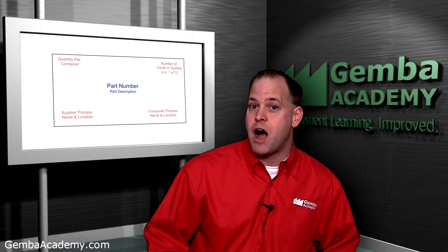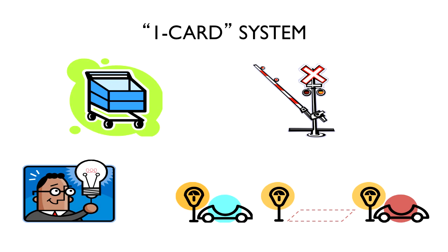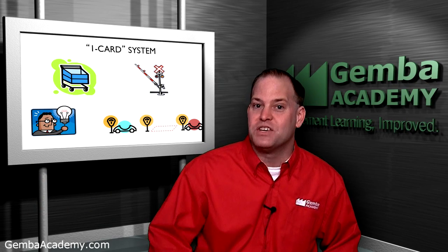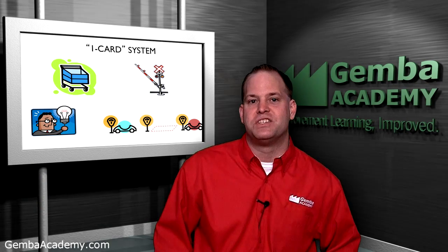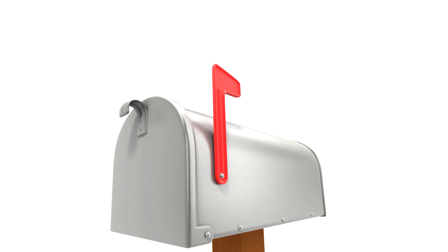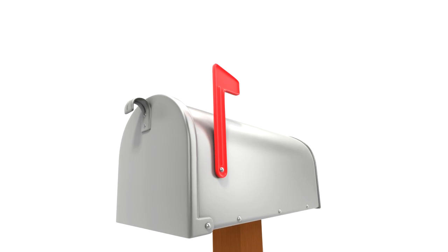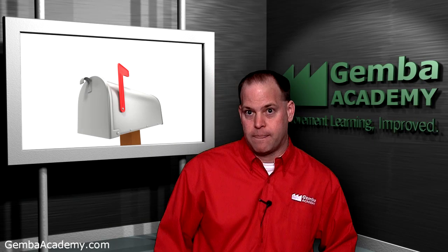The next type of Kanban system is referred to as a one-card system. While it's called one card, there may not be a card used at all — instead, we might use empty containers, carts, colored golf balls or ping pong balls, a light, or really any kind of signal that conveys information. One of the most practical examples of a one-card Kanban system is the mailbox flag: when the flag is up, a signal is sent to the postal worker that there's something inside the mailbox we wish to mail.